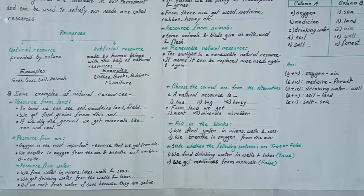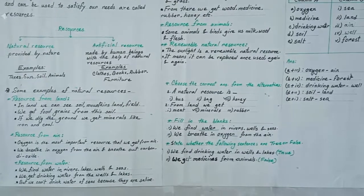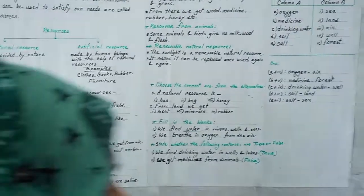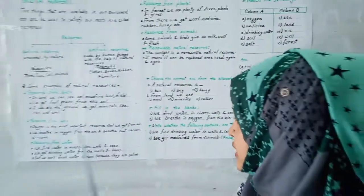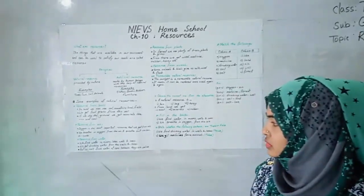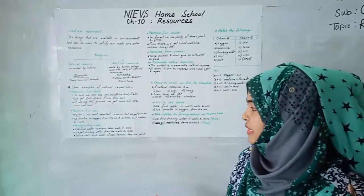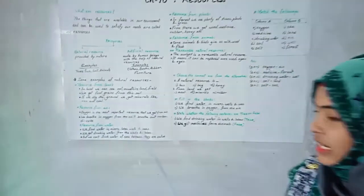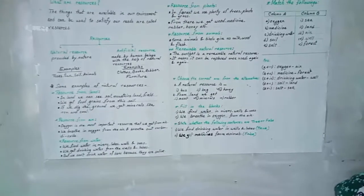Resource from air. In our air, oxygen is the most important element — that means resource. We breathe in oxygen from the air and breathe out carbon dioxide.